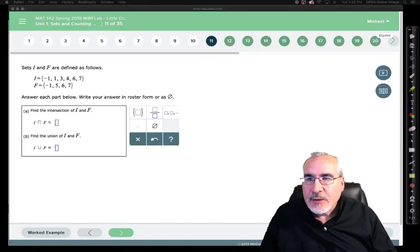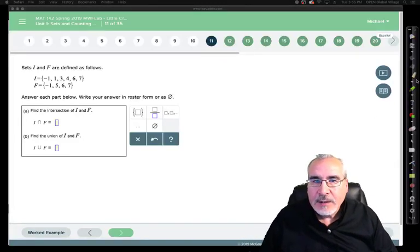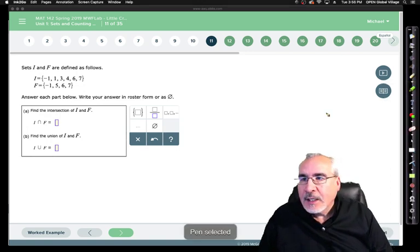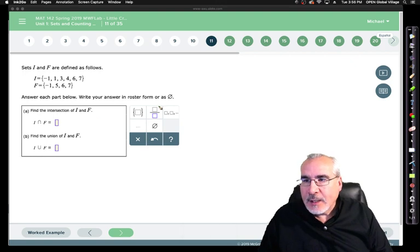Okay, here we are at question number 11. Let's go ahead and get our pencil ready. Screen again. We're given two sets, this time I and F, defined here as such. Answer each part of the question.